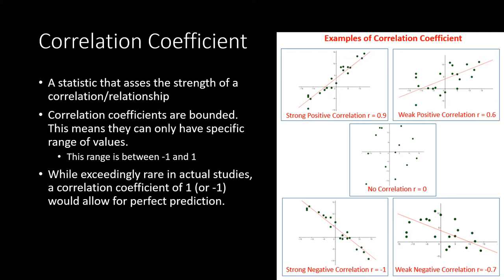Moving one window over to the right, you see a weak positive correlation of 0.6. Here again you see a line of best fit drawn through the data following the same general pattern from the bottom left to the top right quadrant, but most of the individual data points are more spread out along this line. Basically, this shows an increased amount of noise in the data, or a higher rate of prediction errors when trying to make predictions based on one known variable onto the unknown variable.